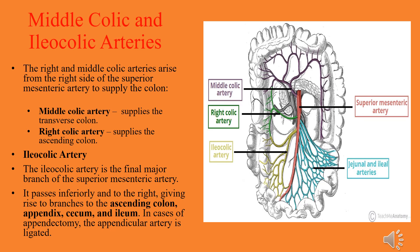On the right side of the superior mesenteric artery: the middle colic artery supplies the transverse colon, and the right colic artery supplies the ascending colon. The ileocolic artery is the final major branch of the superior mesenteric artery, passing inferiorly to the right and giving branches to the ascending colon, appendix, and cecum.